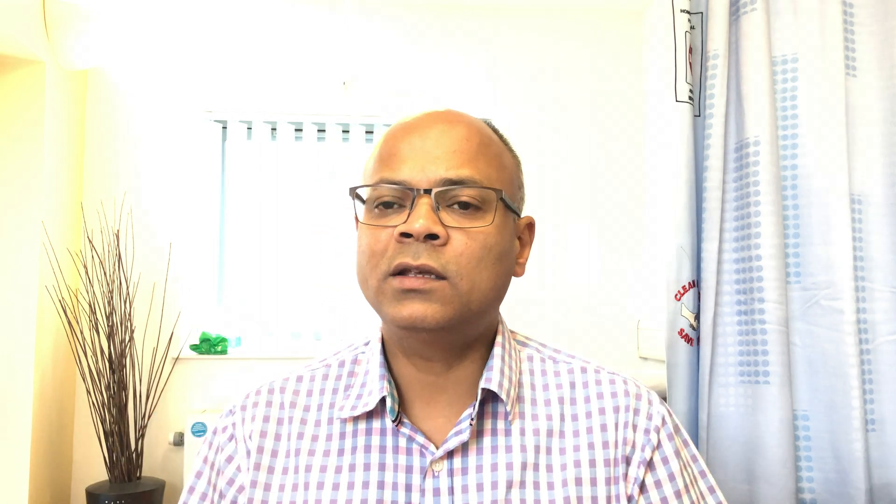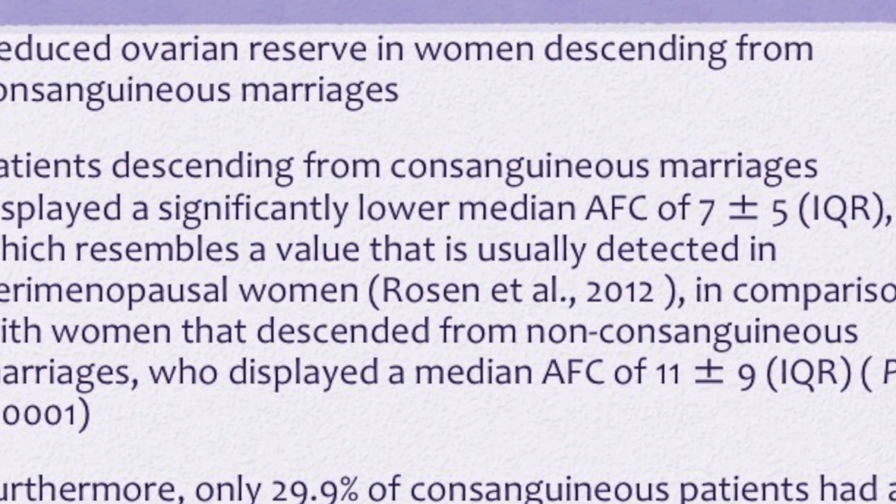Regarding female fertility, there are reports indicating that ovarian reserve is decreased in women from consanguinous marriages. They display a slightly lower median antral follicle count (AFC) and lower AMH compared to women from non-consanguinous marriages. In one particular study, 69% of these patients had an AFC of less than nine at age 25, which was quite in contrast to non-consanguinous patients, whose AMH values were also significantly higher.